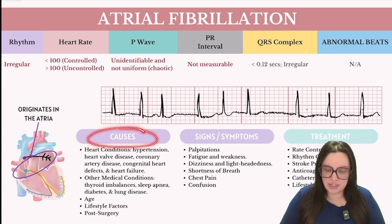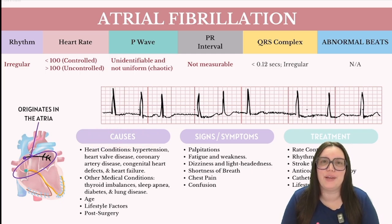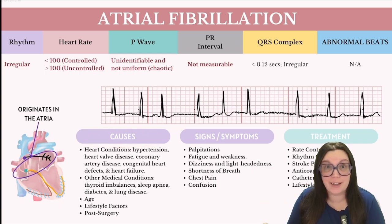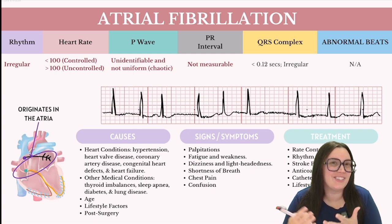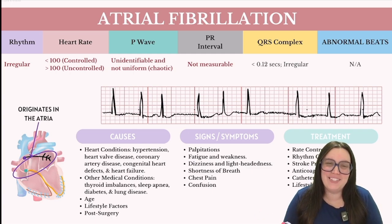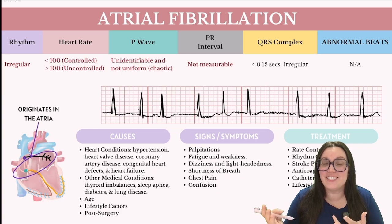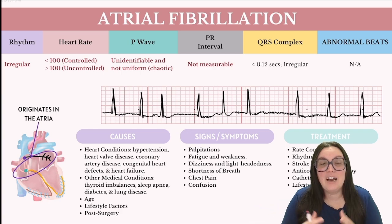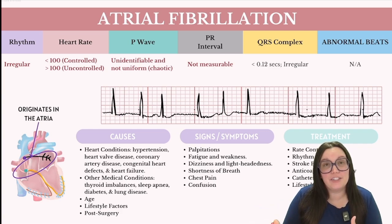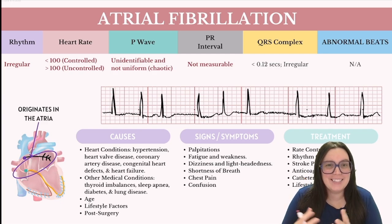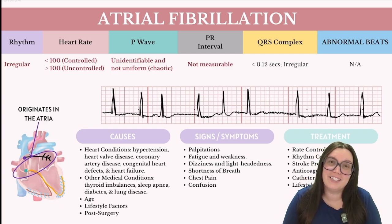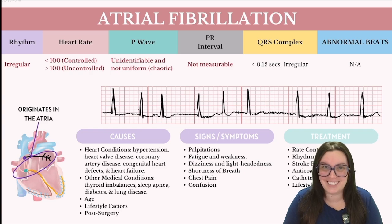What are some of the causes when it comes to AFib? It could be numerous kinds of heart conditions. We have chronic conditions such as hypertension, heart valve disease, coronary artery disease, congenital heart defects, as well as heart failure. Other medical conditions can include thyroid imbalances, especially hyperthyroidism, sleep apnea, and other chronic conditions like diabetes and lung disease.